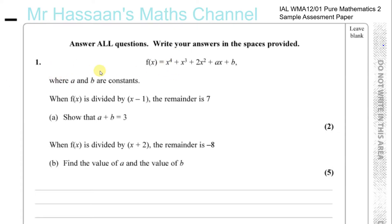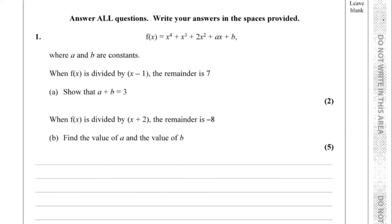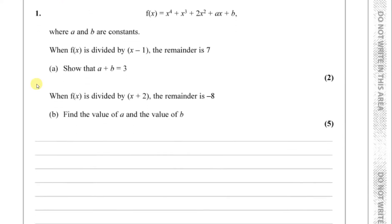For question number one, we're given a function f(x) = x⁴ + x³ + 2x² + ax + b, where a and b are constants and x is a variable. When f(x) is divided by x minus 1, the remainder is 7. We need to show that a plus b equals 3. We're going to use what's called the remainder theorem.